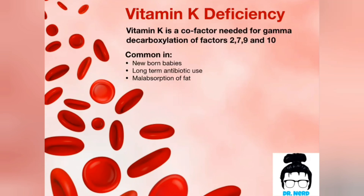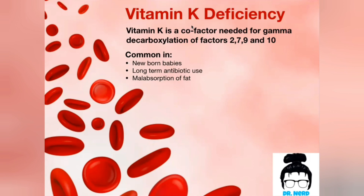Moving on to facilitator deficiency: Vitamin K is one of those facilitators, and it's a co-factor needed for the activation of multiple factors — factor II and X from the common pathway, and factor VII from the extrinsic pathway. Vitamin K is produced by the normal flora in the gut, so it's common in newborn babies who have a sterile gut and in long-term antibiotic use where the antibiotic kills the flora. It's also common in malabsorption of fat, since vitamin K is a fat-soluble vitamin and needs fat to be utilized.